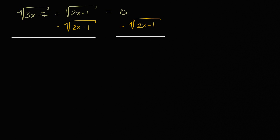On the left hand side, I just have square root, these cancel out, so I'm just left with the square root of three x minus seven is going to be equal to the negative of the square root of two x minus one.